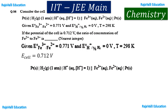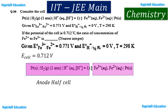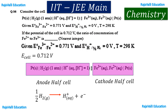We consider the cell notation. On the left-hand side is the anode half-cell, and on the right-hand side is the cathode half-cell. At the anode, oxidation occurs, so the reaction is: ½H₂ → H⁺ + e⁻. At the cathode, reduction occurs, so: Fe³⁺ + e⁻ → Fe²⁺.